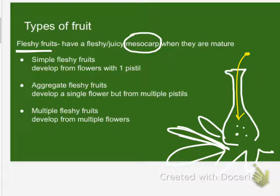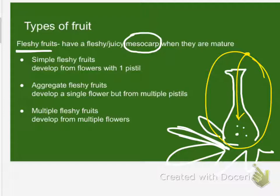Simple fruits develop from a single pistil — one pistil. You can have a fruit that develops from a single flower but with more than one pistil, all sticking up in the same place. And then you can have stuff that develops from a whole bunch of flowers shoved together, which is kind of weird. I think pineapples are a multiple fleshy fruit. Who knew?